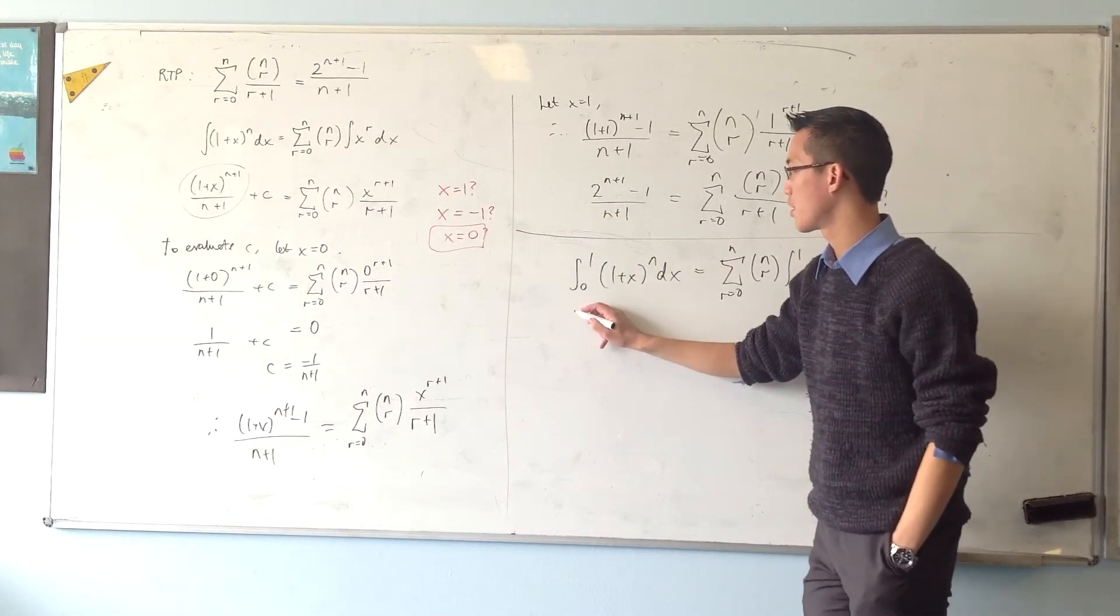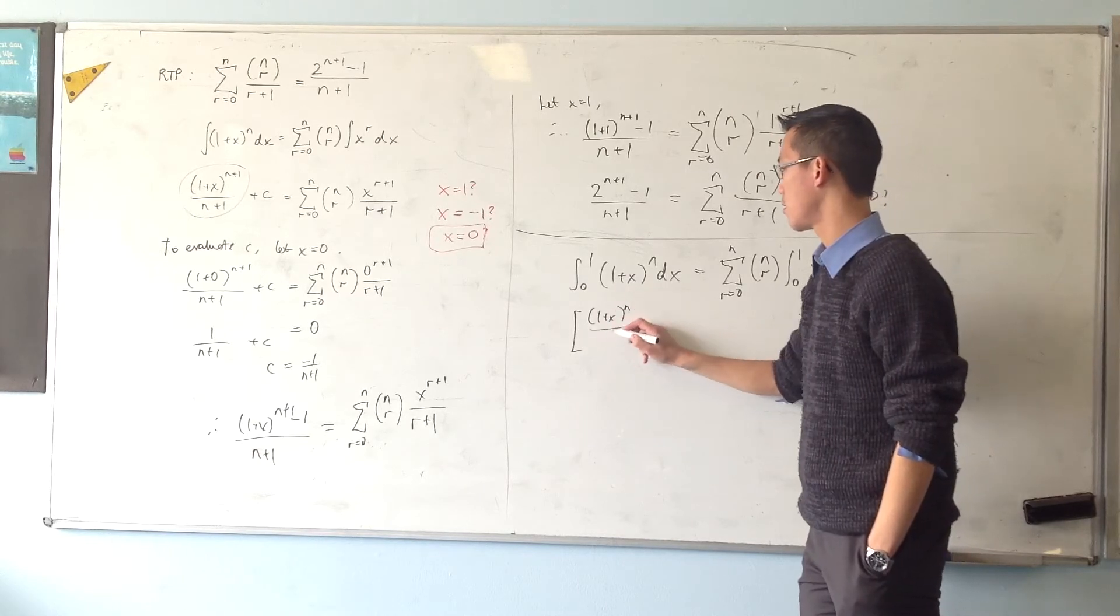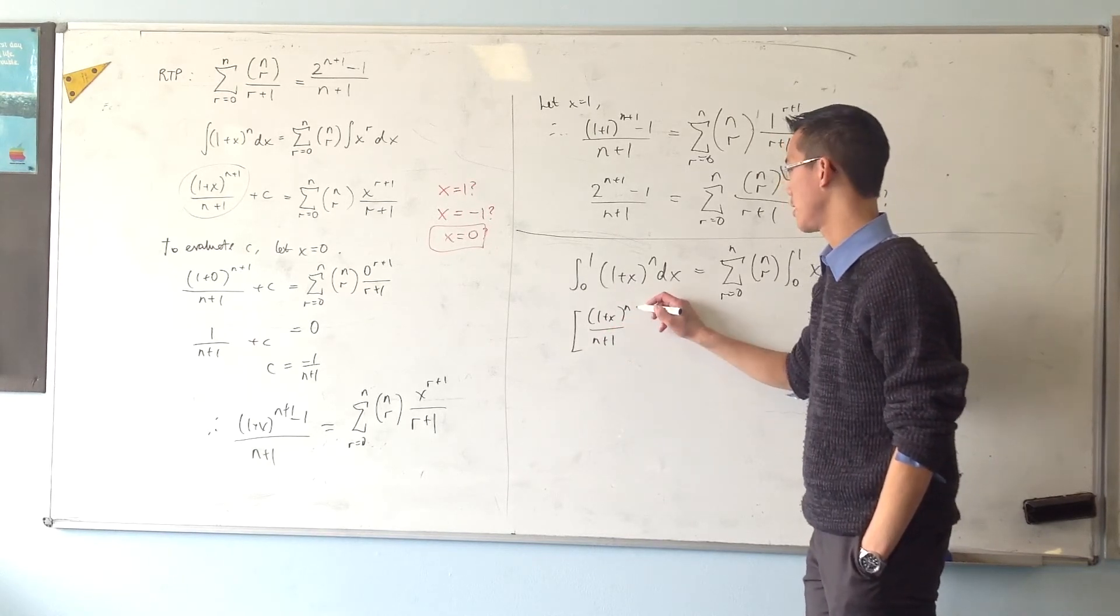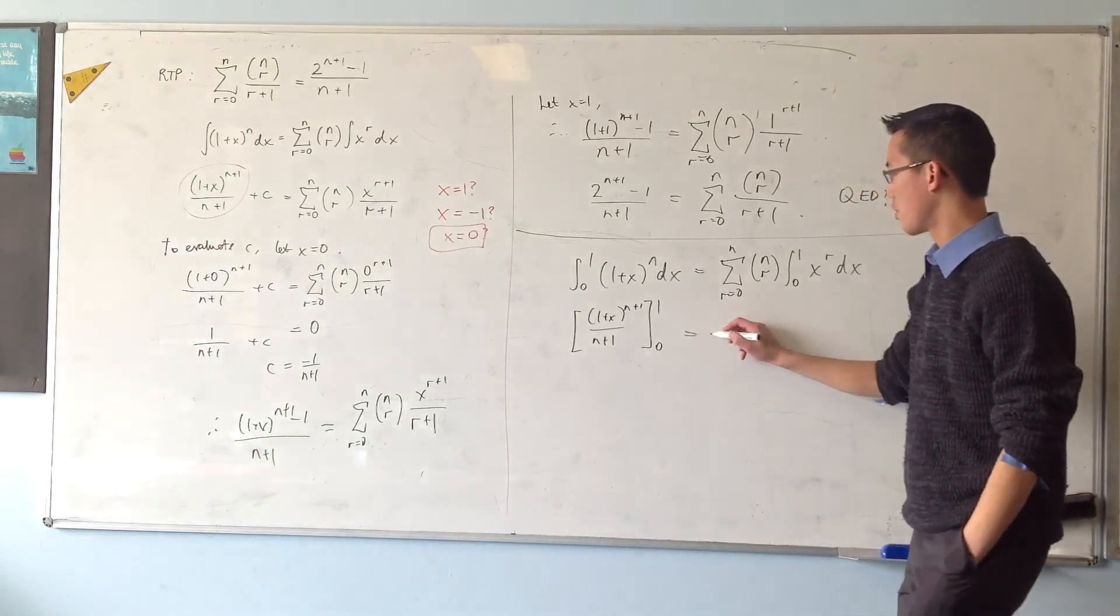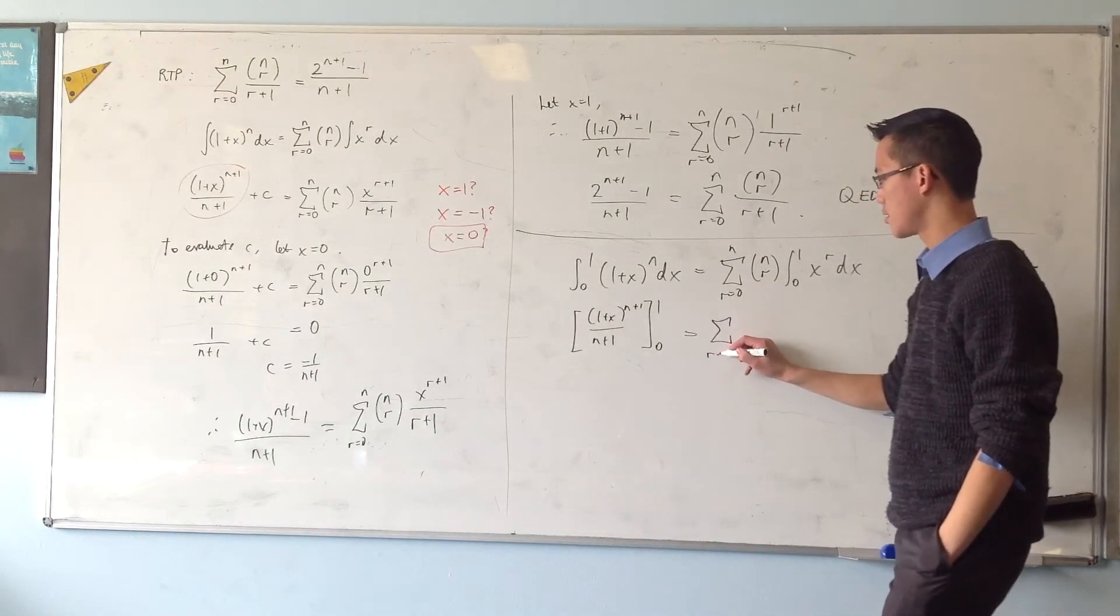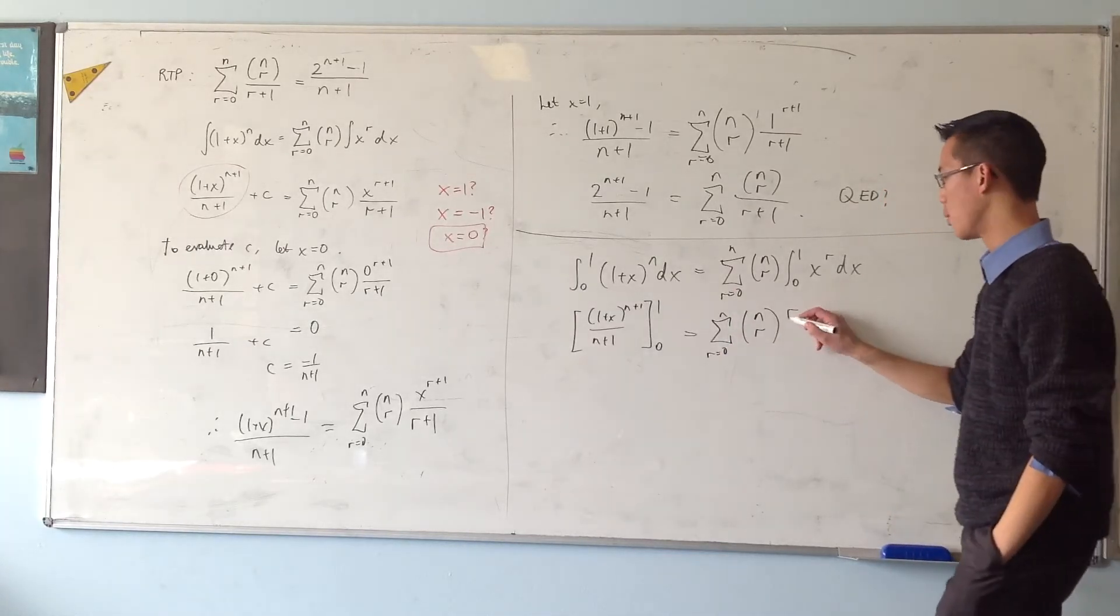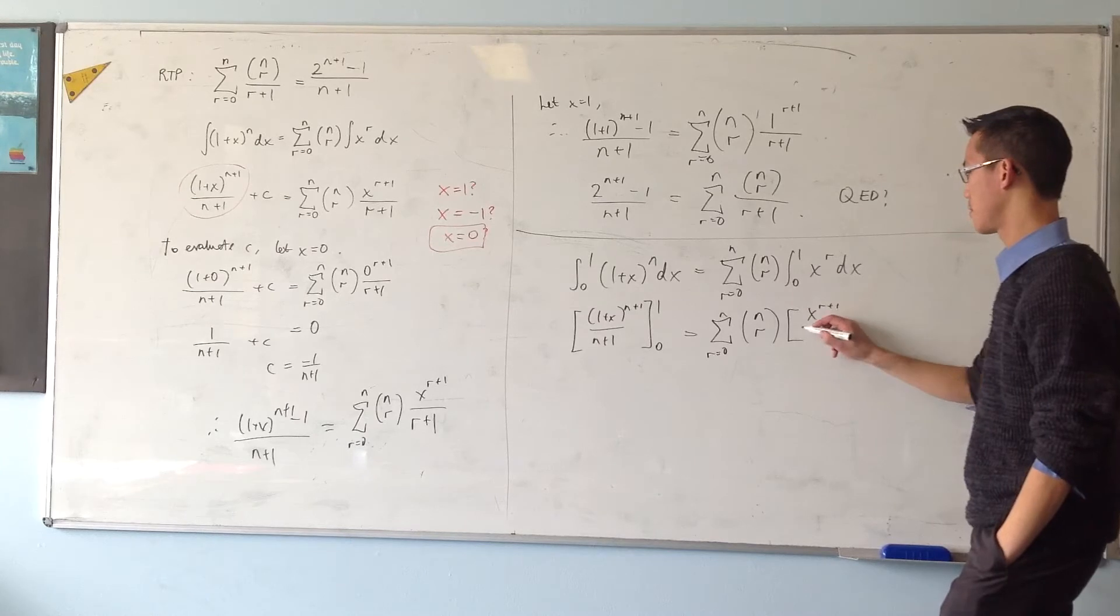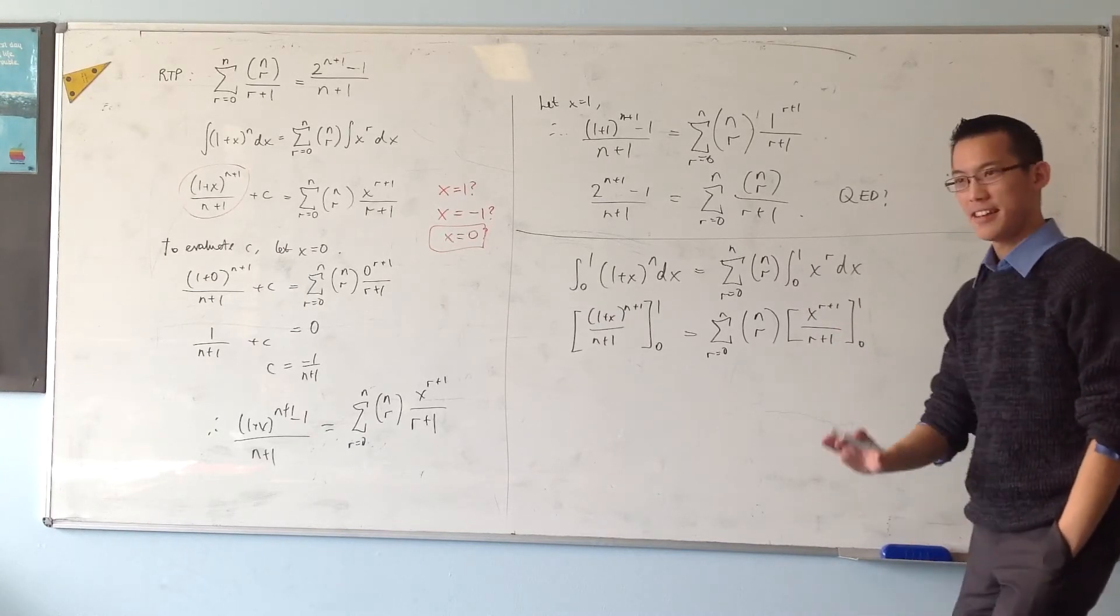So I'm going to go 1 plus x to the n plus 1 over n plus 1, and I'm going to evaluate that from 0 to 1. And on the right-hand side, I have this summation, n choose r, and then this, I'm also going to evaluate from 0 to 1. Now, watch this. Remember, all this means is evaluate for 1 and then subtract it when you evaluate it for 0.